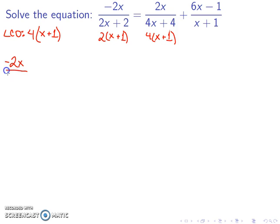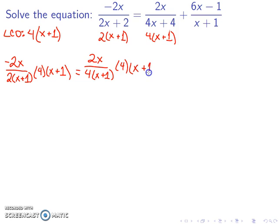So I have negative 2x over 2 times x plus 1 times 4x plus 1, which is equal to 2x over 4x plus 1 times 4x plus 1 plus 6x minus 1 over x plus 1 times 4x plus 1.